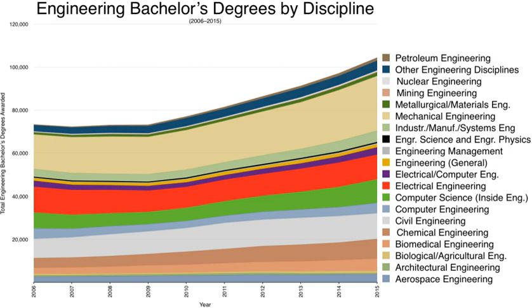In Hong Kong, engineering degree programs — four-year bachelor's degrees — are offered by public universities funded by the University Grants Committee (UGC). There are 94 UGC-funded programs in engineering and technology offered by City University of Hong Kong, the Chinese University of Hong Kong, the Hong Kong Polytechnic University, the Hong Kong University of Science and Technology, and the University of Hong Kong.